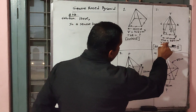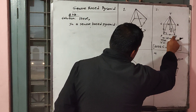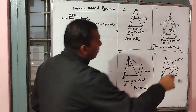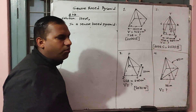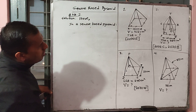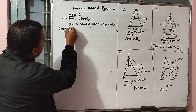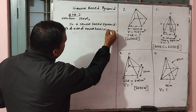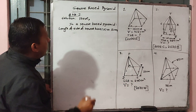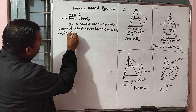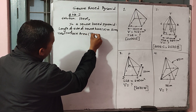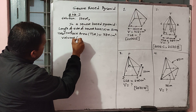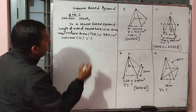Ok students, look here at question number 2. We have given that in the square base pyramid, the length of side of square base A equals 12, total surface area is given as 384 cm squared. We have to calculate the volume.